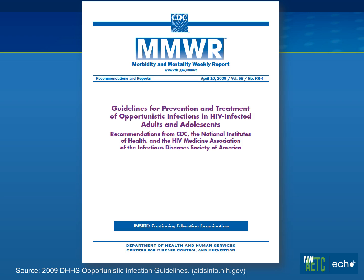The guidelines for prevention and treatment of OIs are available online at the AIDSinfo.nih.gov website. It is updated at regular intervals — a new iteration is coming out soon. This one was last updated in 2009. It doesn't turn over as rapidly as the HIV ARV treatment guidelines, but it will be coming out with a new version within the next year.